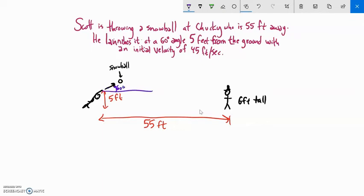Scott launches it at a 60-degree angle. He lets it go five feet from the ground, and the initial velocity is 45 feet per second.